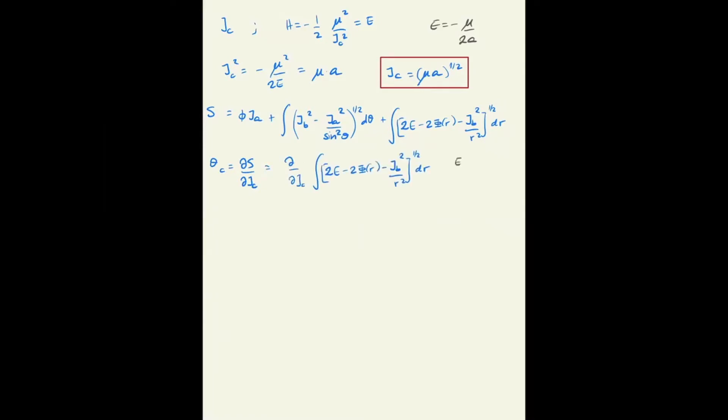Now let's write the energy in terms of Jc and substitute the potential by the Keplerian potential. This expression then becomes where we substituted also Jb for the angular momentum and took the derivative of one over Jc squared, and took also the derivative of minus one over Jc squared as being plus Jc cubed as it appears here.